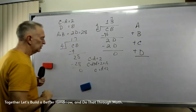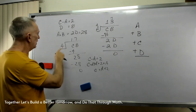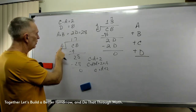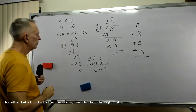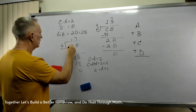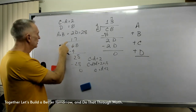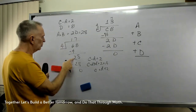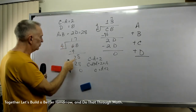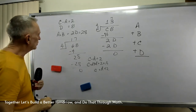C equals A plus 2. We said A was 4, so 4 plus 2 is 6 — C equals 6. So now we would have 68 divided by 4. Let's just see if that works: 1 times 4 is 4, 6 minus 4 is 2, bring down the 8, 7 times 4 is 28, 28 minus 28 is 0. That works out just fine.